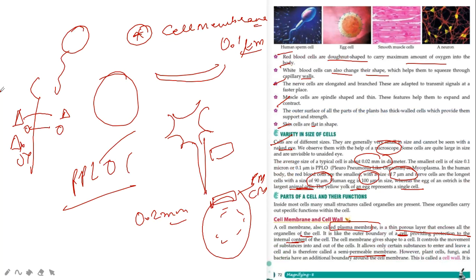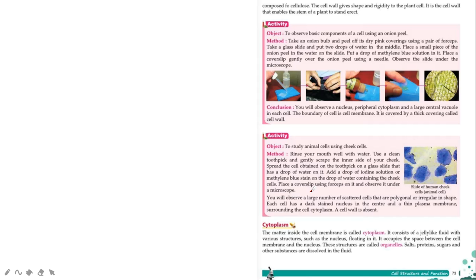However, the plant cells, fungi and bacteria have additional boundary around the cell membrane. What do we call that additional boundary? Plant cells, fungi and bacteria have cell wall. It is composed of cellulose. The cell wall gives shape and rigidity to the plant cell. The cell wall enables the stem of the plant to stand erect.